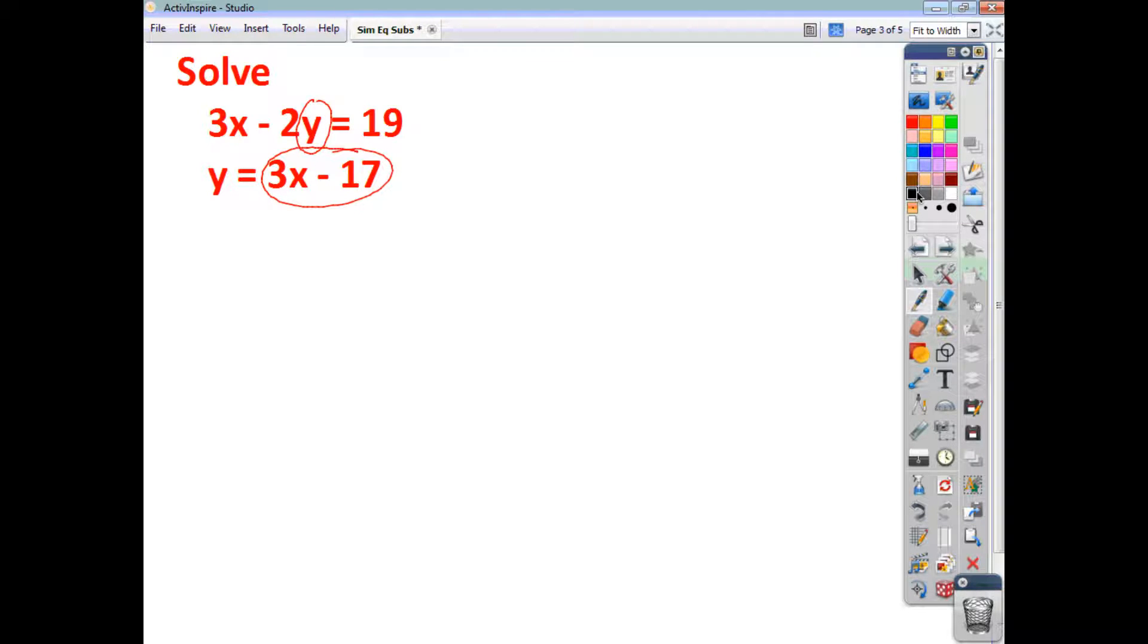And that then gives me what I want, an equation which has only one variable. So if I take this equation here, and instead of writing 3x minus 2y, if I write 3x minus 2 lots of 3x minus 17, because I know that y is equal to 3x minus 17 because of what this equation tells me. So 3x minus 2y, or 2 lots of 3x minus 17, that's equal to 19. Tidy it up. On the left-hand side, we end up with 3x minus 6x. Negative times a negative gives you plus 34, and that's equal to 19.